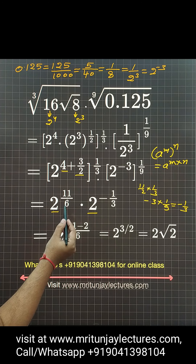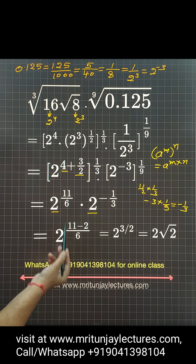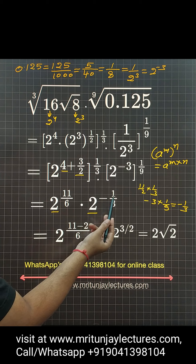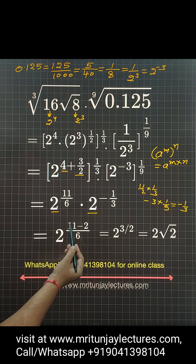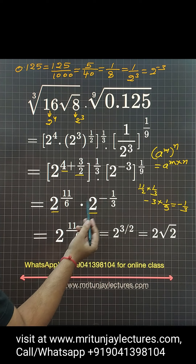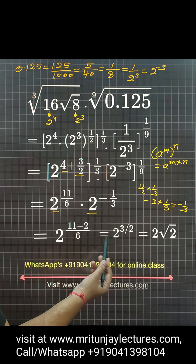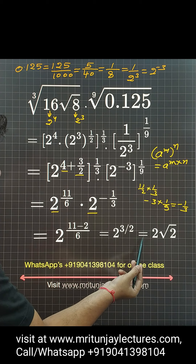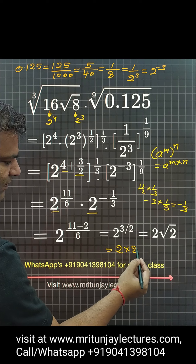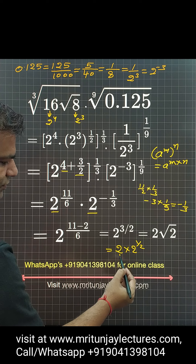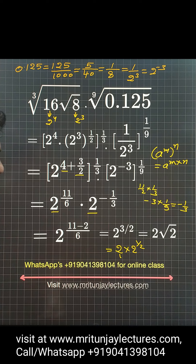Since the bases are the same, we add the powers: 2 to power 11 by 6 minus 1 by 3. Taking LCM, we get 11 minus 2 divided by 6, which is 9 by 6, that is 3 by 2. And 2 to power 3 by 2 means 2 into 2 to power 1 by 2 — simply root 2 — so the answer is 2 root 2.